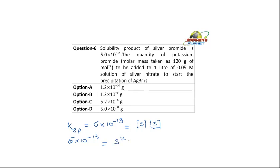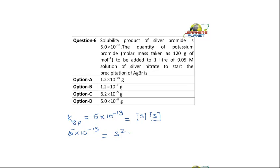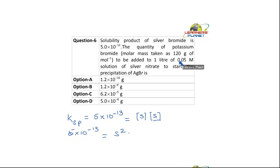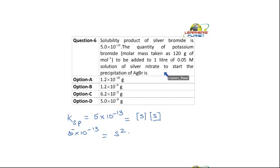You can find out the solubility of anyone from this. Now, the quantity of potassium bromide to be added to 1 liter of 0.05 molar solution of silver nitrate to start the precipitation of AgBr.